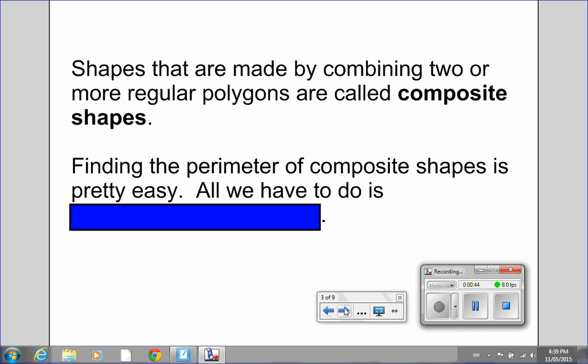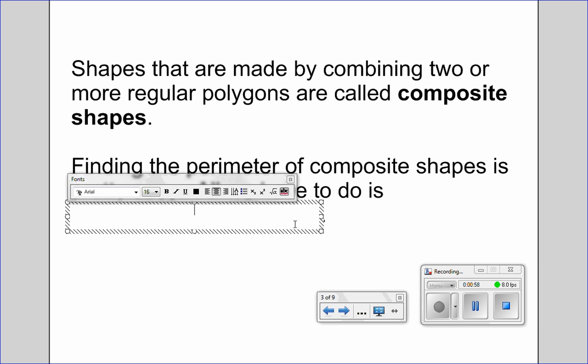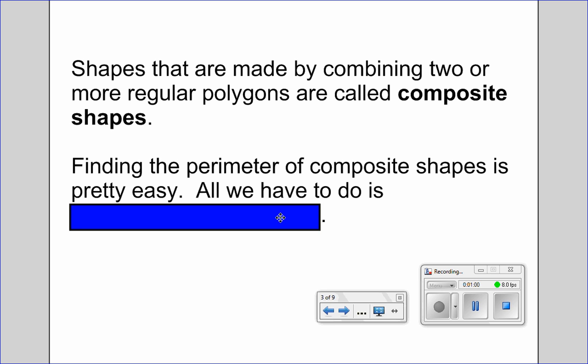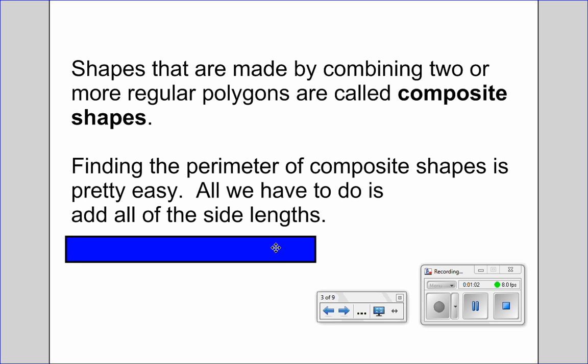Shapes that are made by combining two or more regular polygons are called composite shapes. Finding the perimeter of composite shapes is pretty easy. All we have to do is add all of the side lengths.